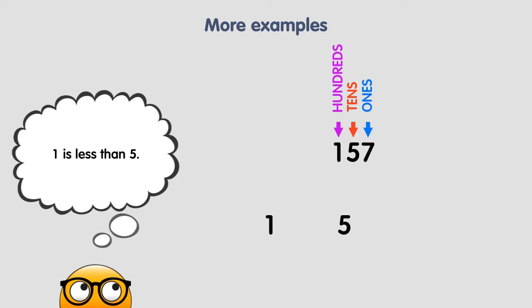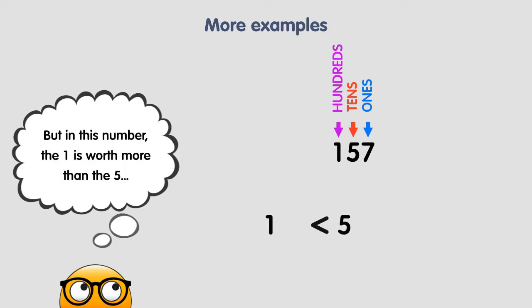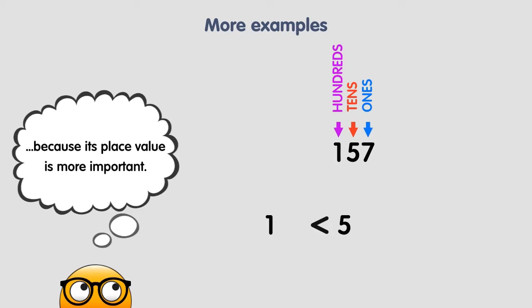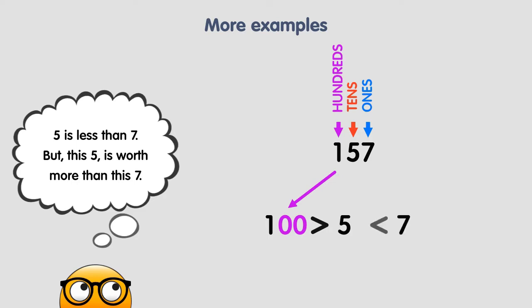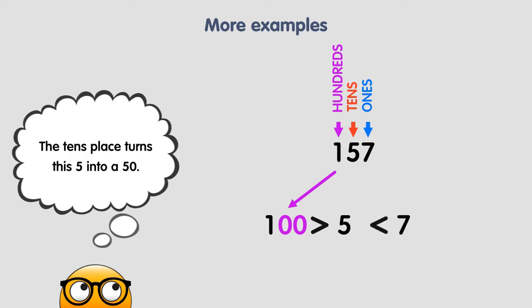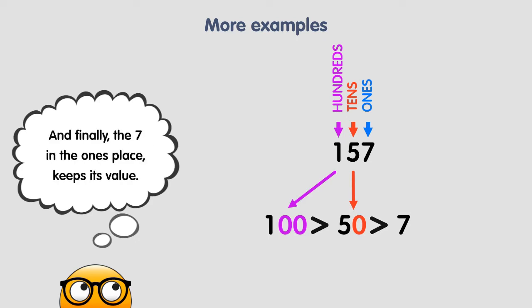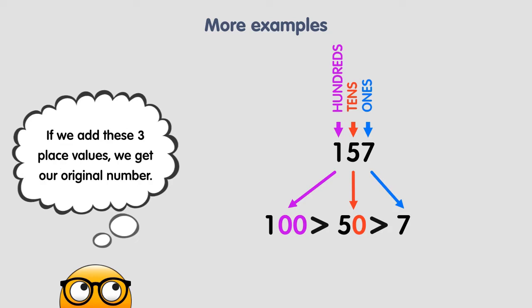1 is less than 5, but in this number the 1 is worth more than the 5 because its place value is more important. The 100's place turns this 1 into 100. 5 is less than 7, but this 5 is worth more than this 7 — the 10's place turns this 5 into 50. And finally, the 7 in the 1's place keeps its value, because digits in the 1's place keep the same value. If we add these 3 place values, we get our original number.